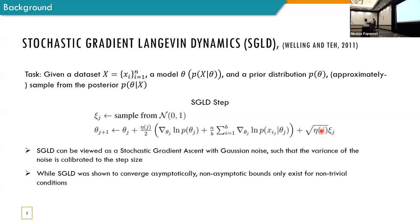Now, SGLD was shown to converge asymptotically. However, non-asymptotic bounds only exist for non-trivial conditions. And you will see why this is important later on. Last thing, in this work, we consider cyclical SGLD, which means that we first shuffle the samples, and then we go over them in a cyclic manner.